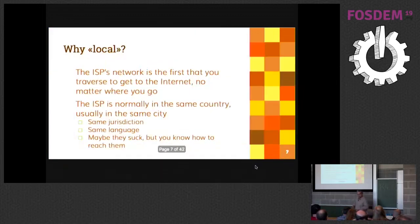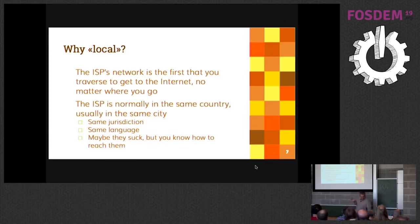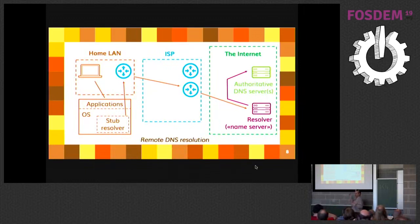This is the local DNS resolution model. It's called local because the ISP's network is topologically nearest to you. But it's not just a matter of network topology — they are also usually in your same country, speak your language, and you have a contract with them. Then what happened is that since local resolution often sucked — ISPs were not providing good name service, or people didn't like the policies applied to the local resolver — remote resolvers started to appear.